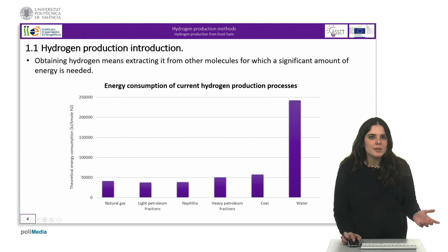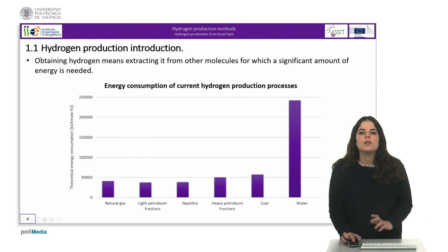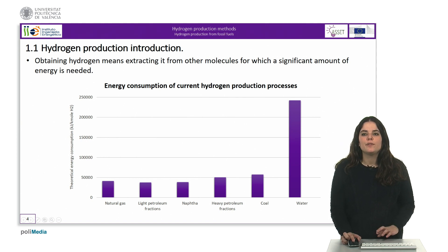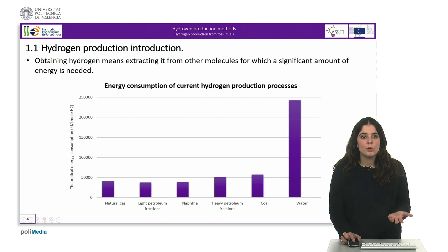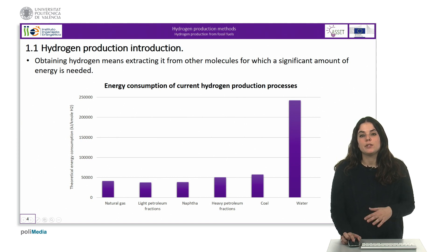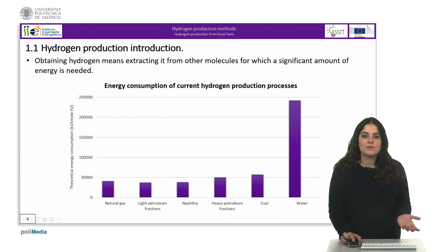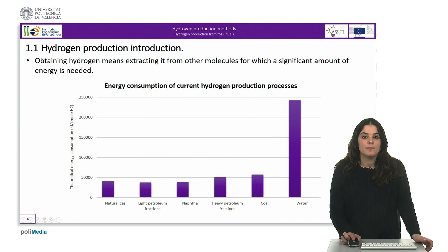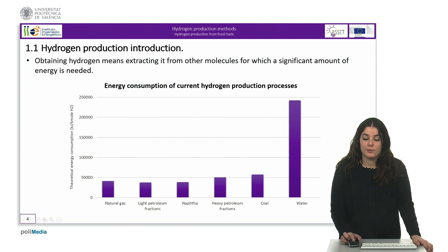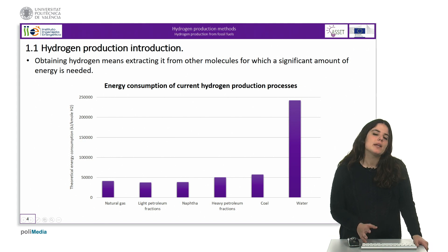Additionally, producing hydrogen costs 3 to 15 times more than producing natural gas and, depending on the process, 1.5 to 9 times more than producing gasoline. Therefore, reducing hydrogen production cost is a key aspect of its implementation.